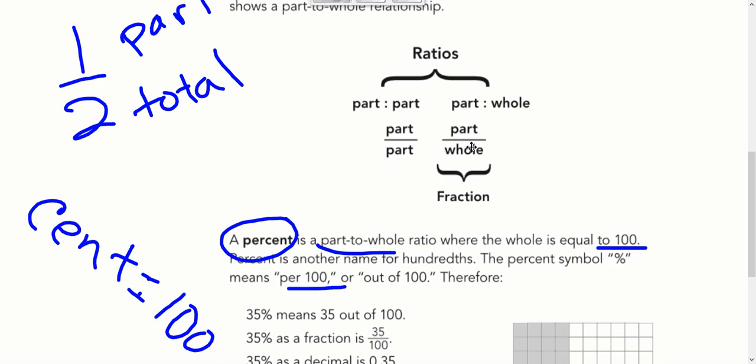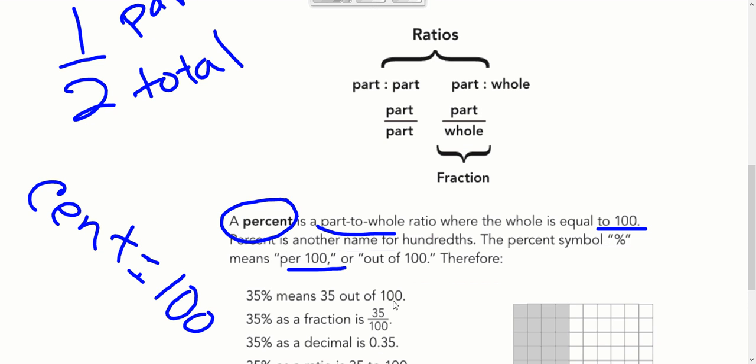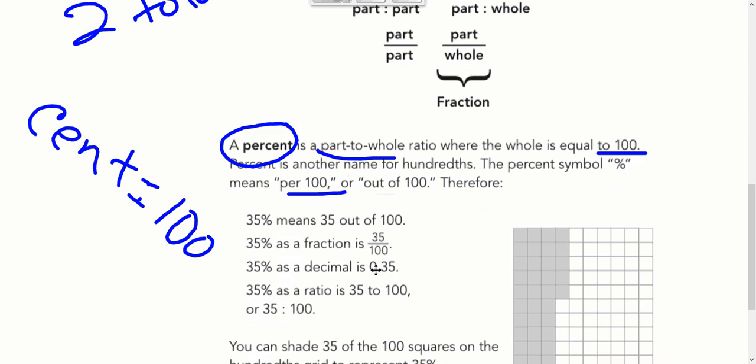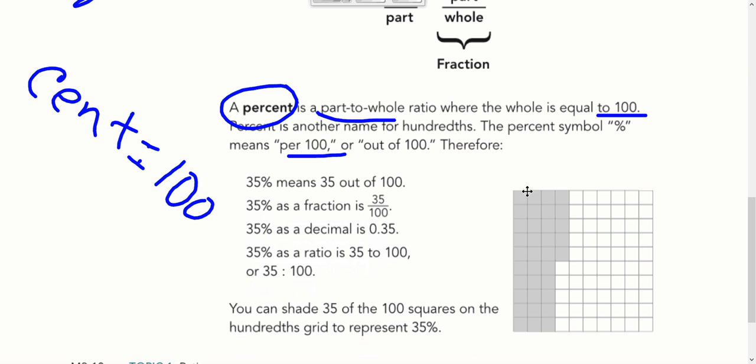Now if we go even further, any part-to-whole ratio is a fraction, but there's a particular fraction that could be called a percent. It is a part-to-whole ratio where the whole is equal to 100. So this bottom number is 100. Whatever the top number is, that's our percent. Because percent, cent meaning 100, means per 100. So if I have 35 percent, it means I have 35 out of 100, or 35 over 100.